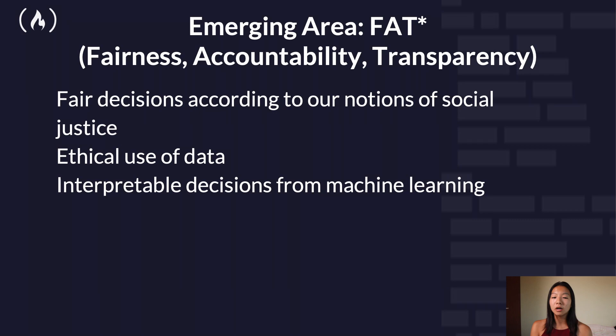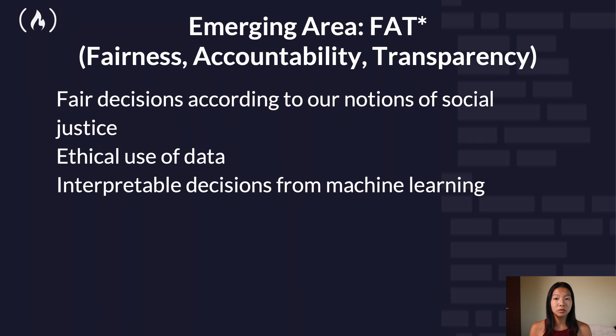And so there's this emerging area called FAT, which stands for Fairness, Accountability, and Transparency. Algorithmic systems contain inherent risks, such as codifying and entrenching biases, reducing accountability, and hindering due process. Being able to quantify and reason about issues of fairness, accountability, and transparency — which is related to reproducibility — has emerged as an important research area. In the next few slides, we'll give some examples of issues seen here.